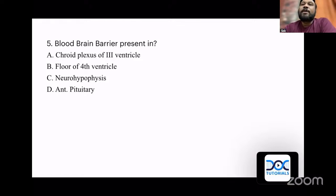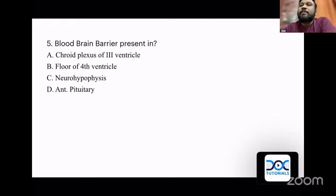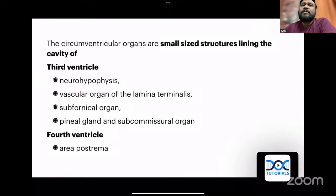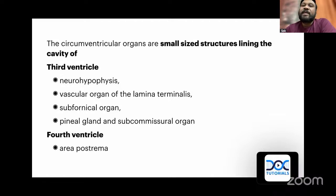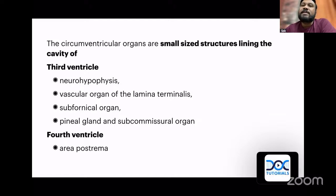Regarding blood-brain barrier: the question asked where the BBB is absent. The answer options were choroid plexus of the third ventricle, floor of the fourth ventricle, neurohypophysis, and anterior pituitary. The answer is anterior pituitary. Circumventricular organs are small structures lining the cavity of the third ventricle — like the neurohypophysis, OVLT (organum vasculosum lamina terminalis), subfornical organ, pineal gland, subcommissural organ, and area postrema — all of which lack a blood-brain barrier. The only exception is the anterior adenohypophysis, so that should be the answer.